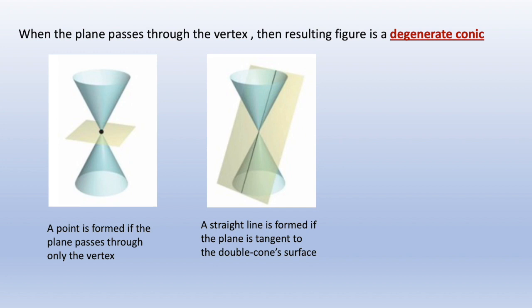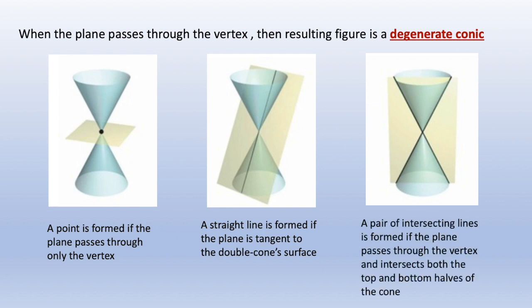The third one is a pair of intersecting lines. It is formed if the plane passes through the vertex and intersects both the top and the bottom halves of the cone.